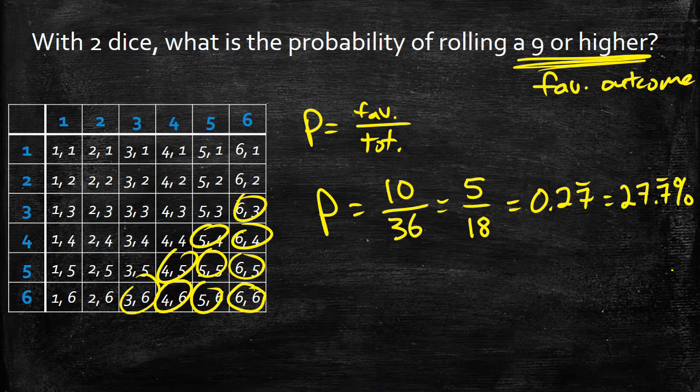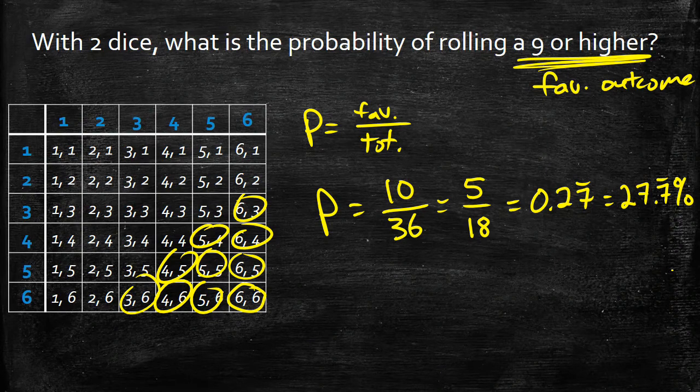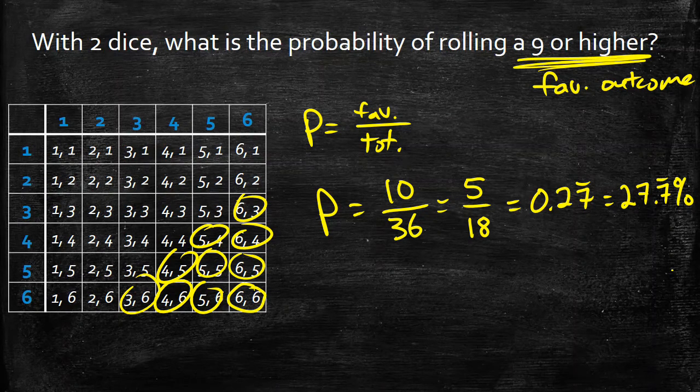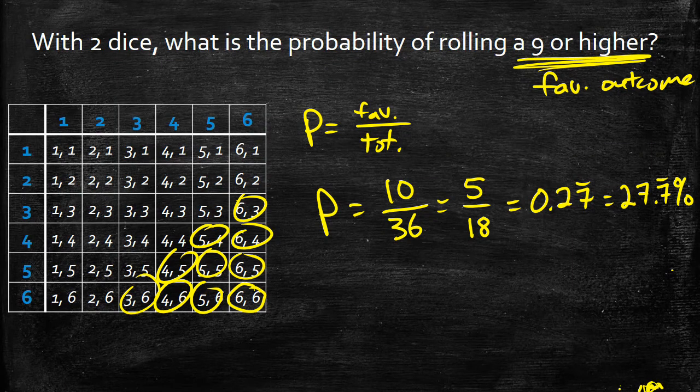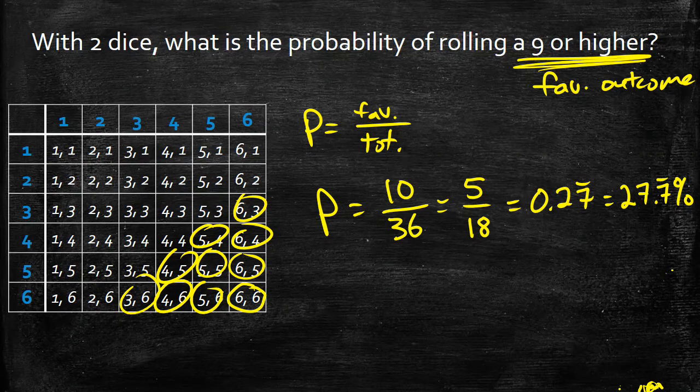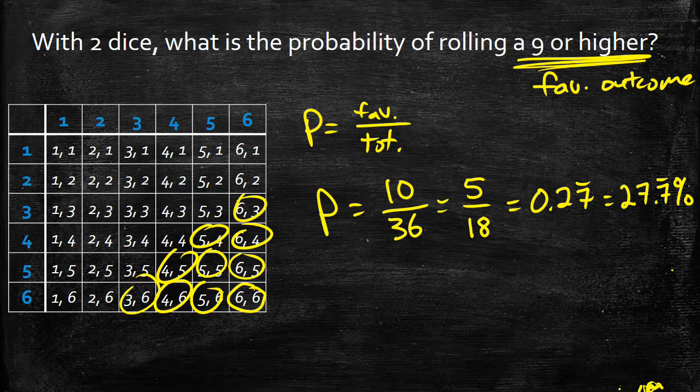That's actually an interesting thing to know if you're ever playing a game where you need to roll a nine or higher, a specific number. You can figure out the exact probability of how likely that's going to happen. So I know what this is telling me is that if I'm going to be rolling two dice, I have a 27.7 percent chance of getting a nine or higher.